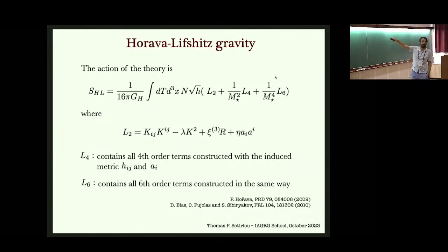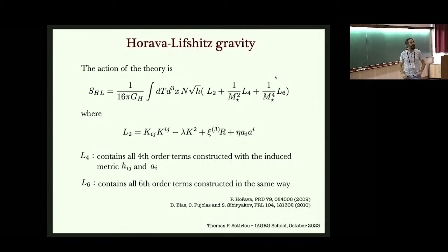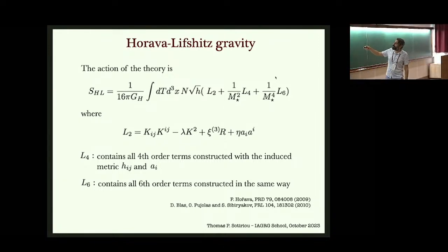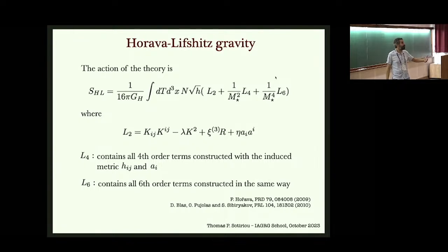This is part of Hořava gravity. The L₂ part (corresponding to the restricted Einstein-aether action) is supplemented by L₄ and L₆ terms, giving about 60 terms in total. L₄ contains all operators with up to four spatial derivatives in the preferred foliation, and L₆ contains all terms with up to six spatial derivatives. Time derivatives appear only at second order; higher-order corrections are spatial. This is a theory with a preferred foliation, higher-order dispersion relations, written in its native foliation with T as the time coordinate.